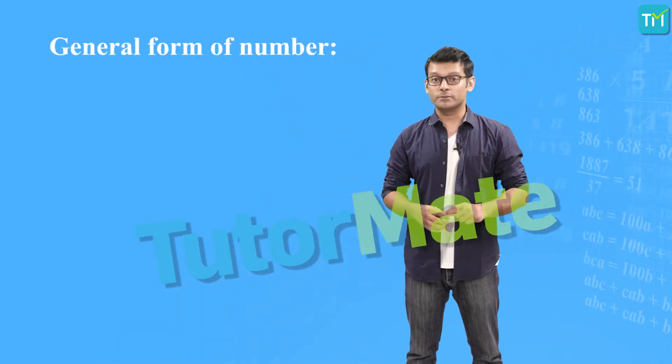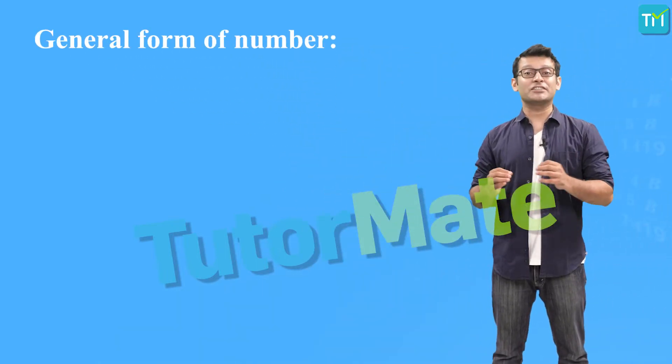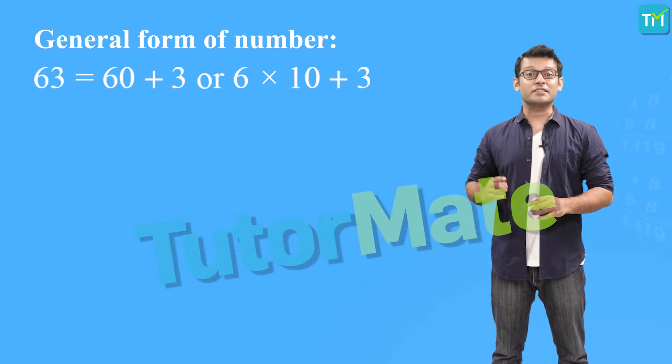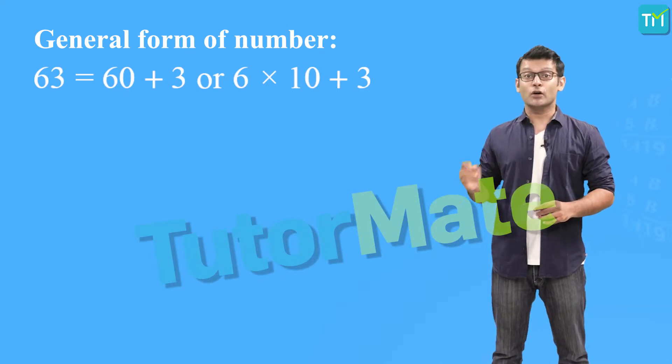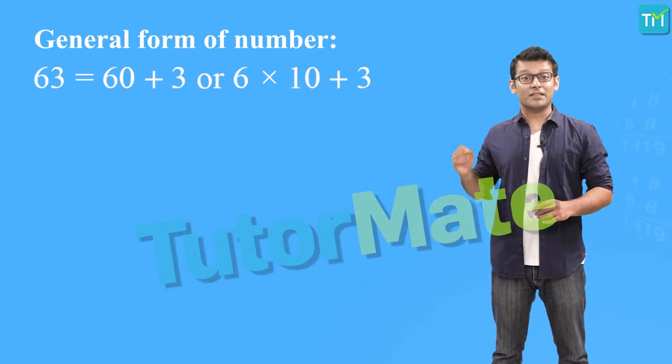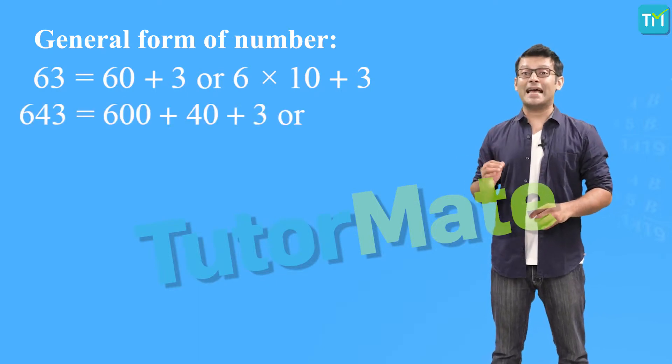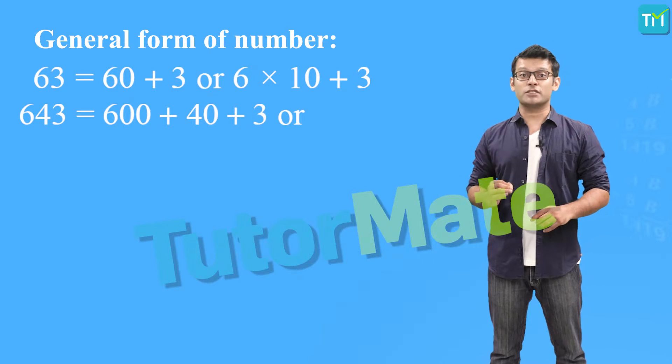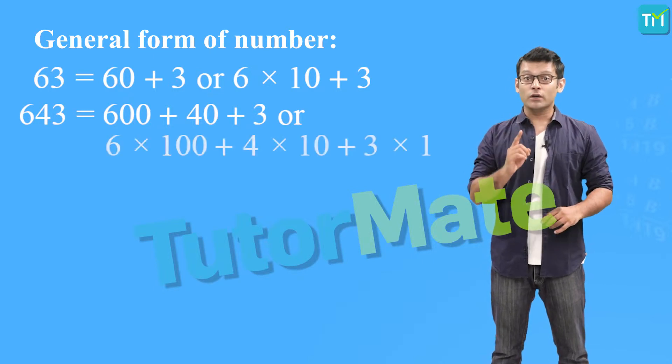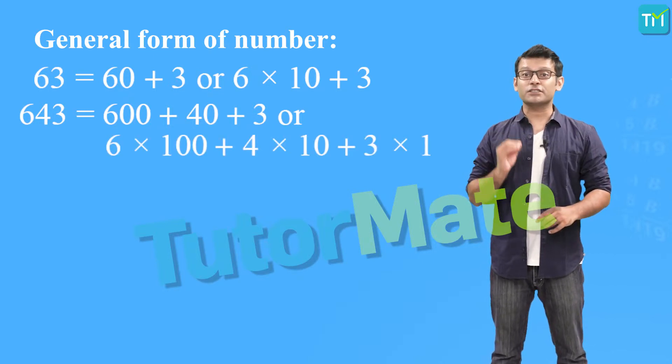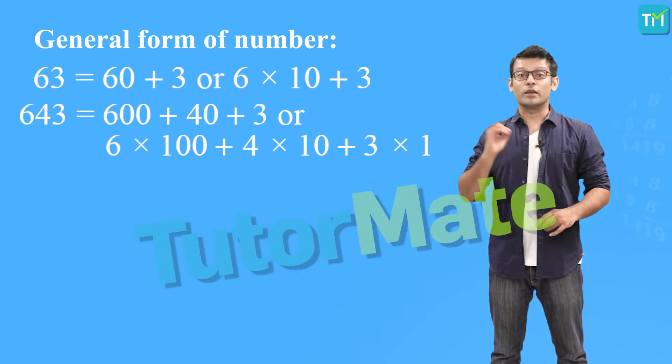Now, we know that every number can be expressed in the general form or its expanded form. If we take the number 63, then it can be written as 60 plus 3 or 6 into 10 plus 3. Similarly, 643 can be expressed as 600 plus 40 plus 3 or 6 into 100 plus 4 into 10 plus 3 into 1.